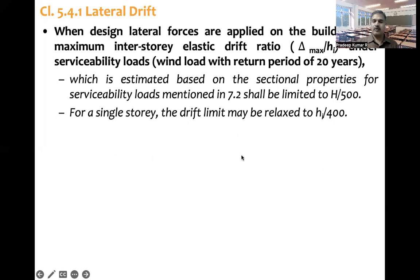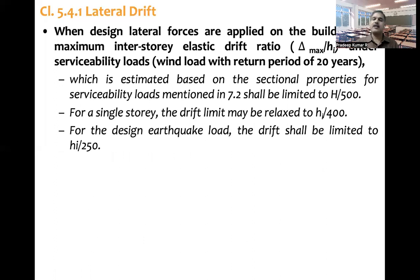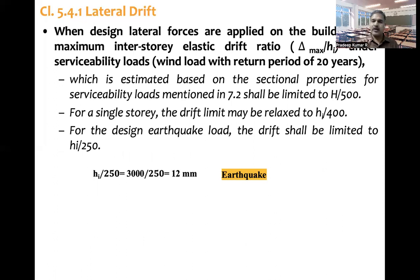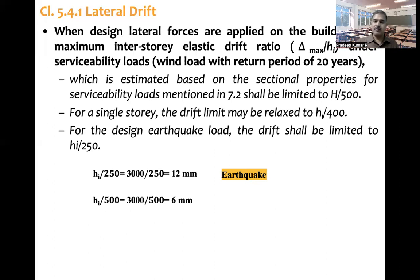There is one more point to this clause: for the design earthquake load, the drift shall be limited to H-i by 250. H-i is 3000 mm divided by 250 = 12 millimeters. So for earthquake, drift is limited to 12 mm, whereas for wind it is H-i by 500 = 6 millimeters. For a single floor under wind it can be relaxed to 7.5 mm. As you can see, wind drift is severely restricted compared to earthquake, where some relaxation is allowed up to 12 millimeters.